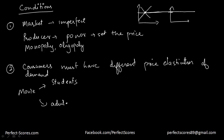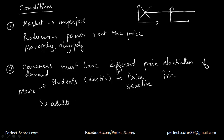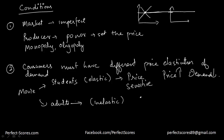Students have a more elastic demand compared to adults, because students are very price sensitive — they have less money to spend. If the price increases even a little, demand will reduce by a large amount. Adults, on the other hand, have more inelastic demand; they don't care as much about a small price increase. So you can charge higher to adults and lower to students.